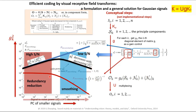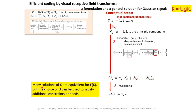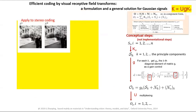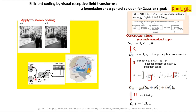Many solutions for k are equivalent because of the freedom in U, which can be used to satisfy additional constraints. These three mathematical steps do not each correspond to a specific hardware stage in the brain, since the brain has many more steps. Now let's apply this to stereo coding. We simplify to a two-dimensional space — just left and right eyes, ignoring space. In V1, a neuron can look at a region in both the left and right eye; what are the weights of this weighted sum? Can we predict it from the efficient coding formulation?